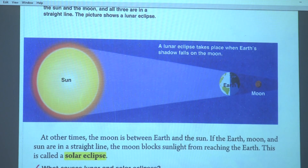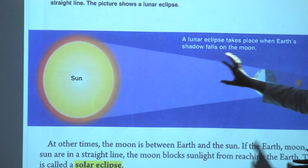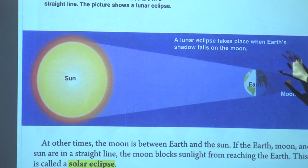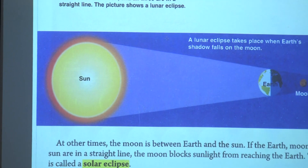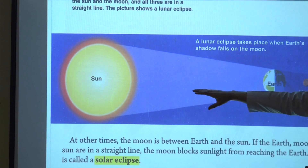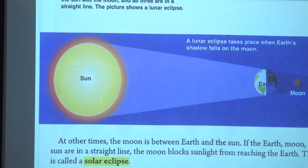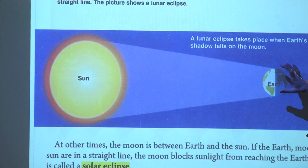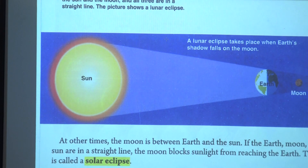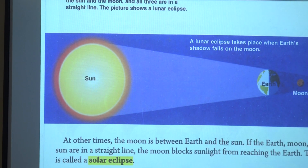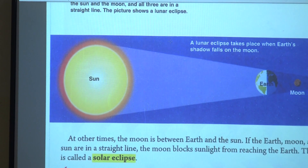As you know, the earth revolves around the sun, and the moon revolves around the earth. Sometimes when the sun, earth, and moon are all in a straight line, the earth blocks the sunlight from reaching the moon. This is called a lunar eclipse.